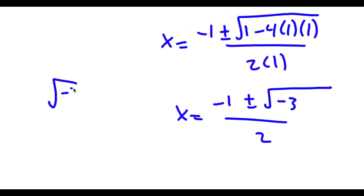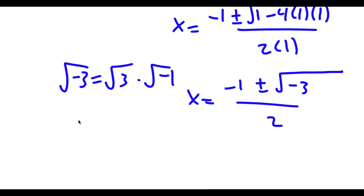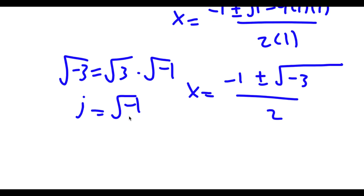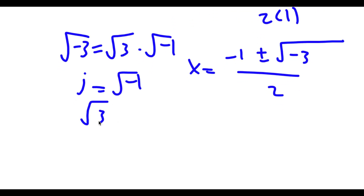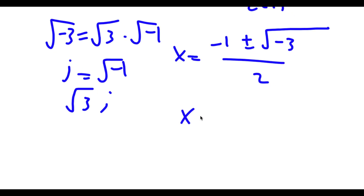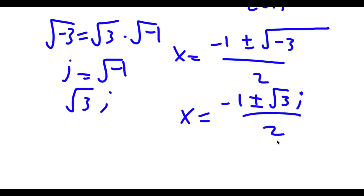So this is equal to negative 1 plus or minus the square root of negative 3, over 2. And the square root of negative 3 is the same thing as the square root of 3 times the square root of negative 1. As you may know, the imaginary number i is equal to the square root of negative 1.